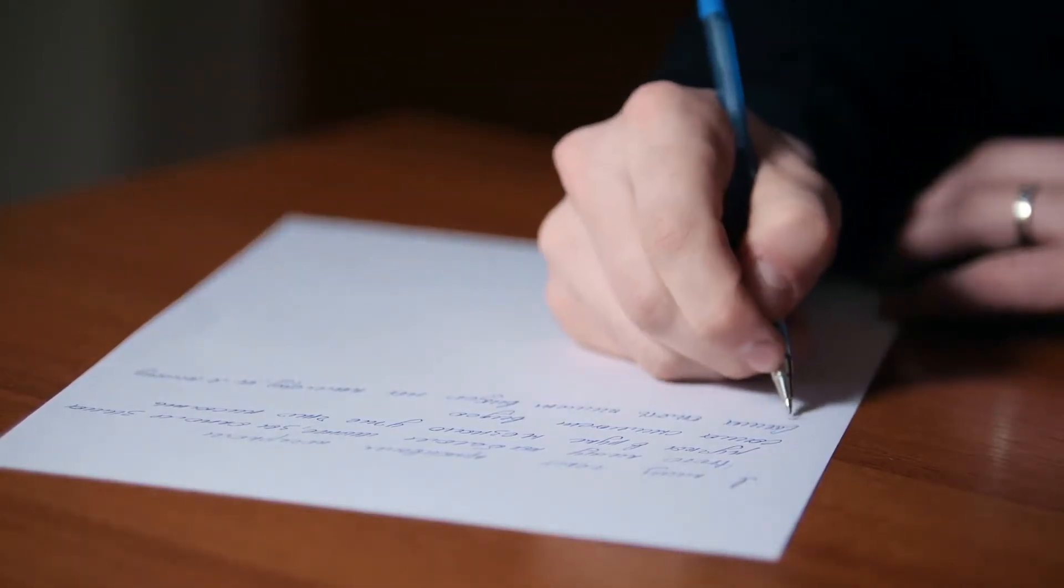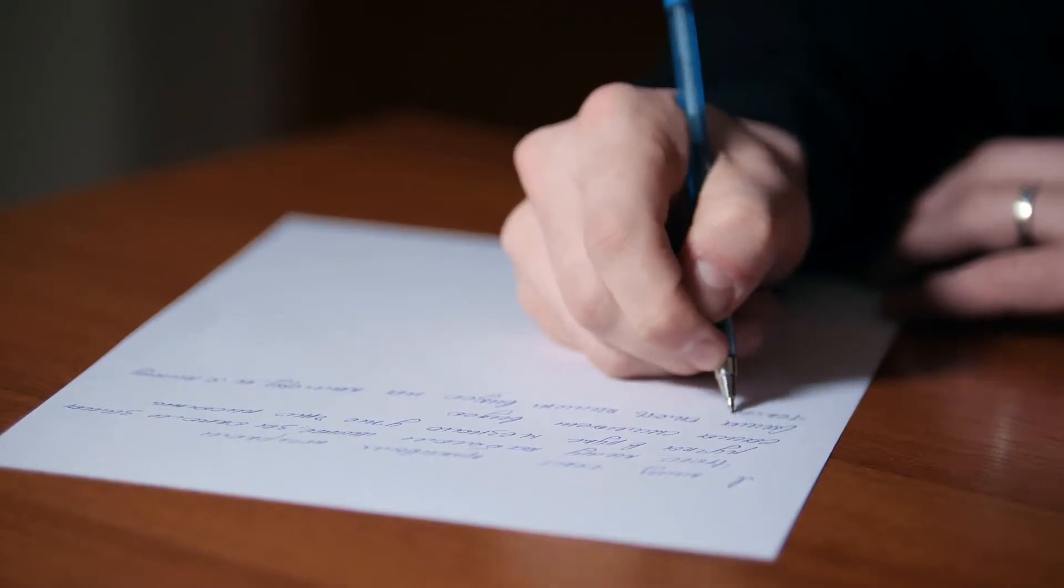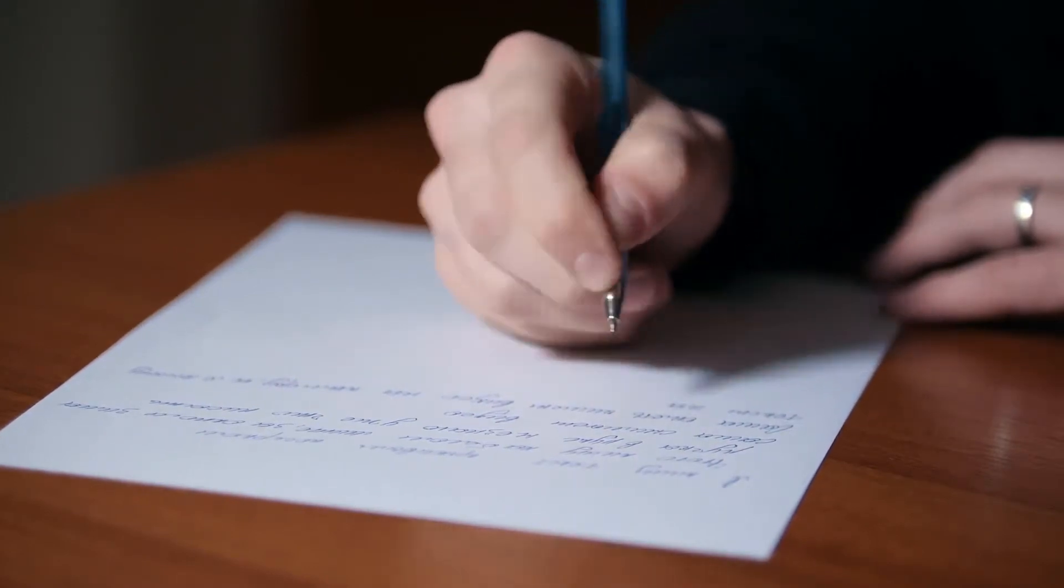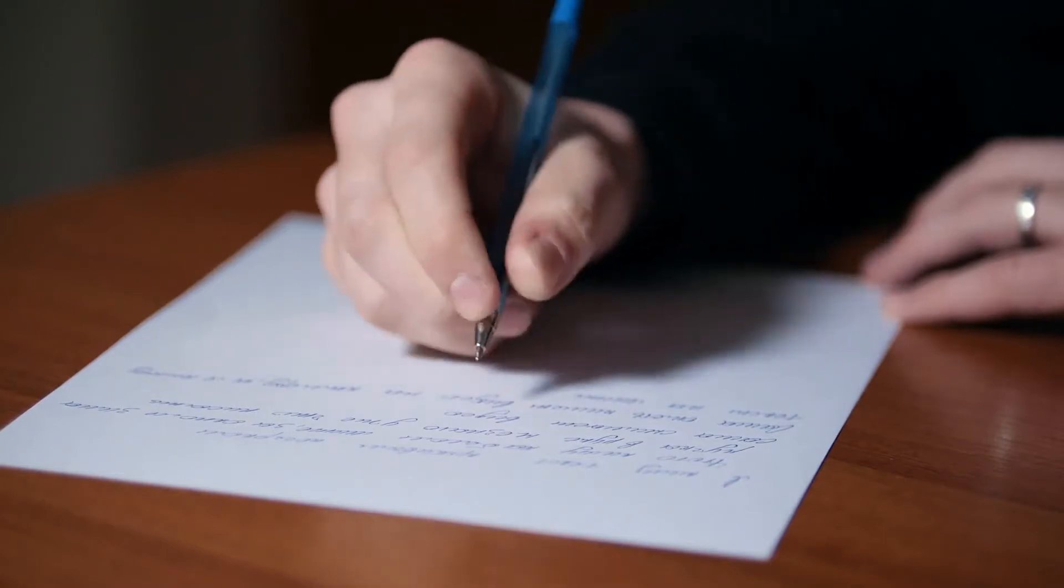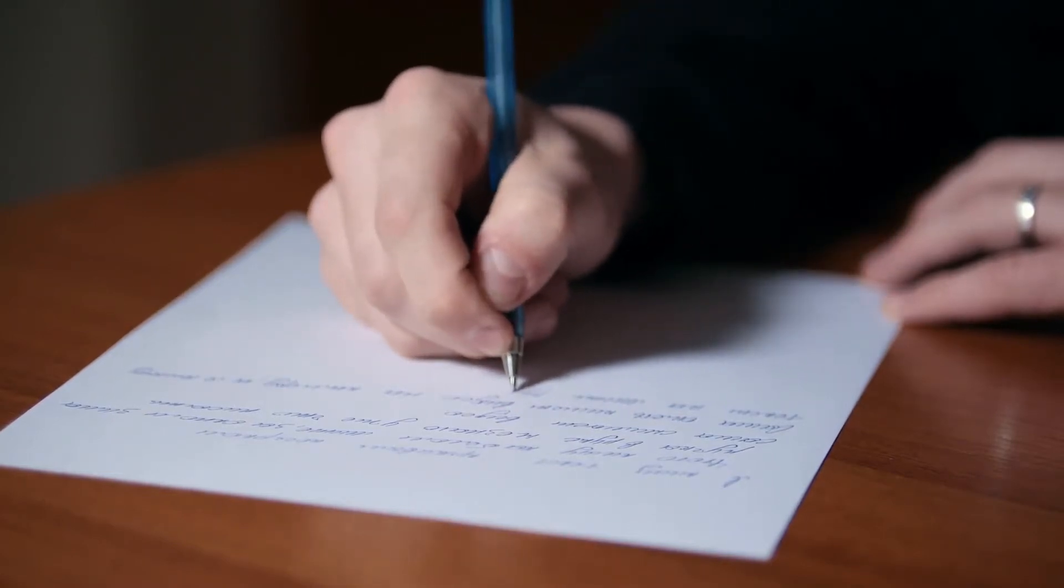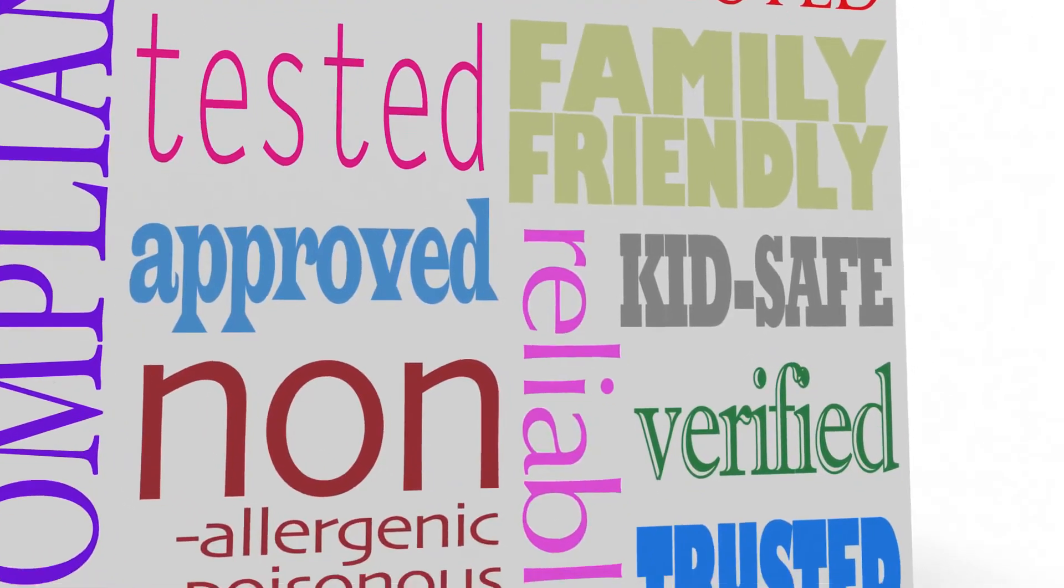Usually, a grantor trust will have not only a trustee, but also a successor trustee. This person is appointed to take over control and management of the trust in the event the grantor dies or becomes mentally or physically incapacitated.